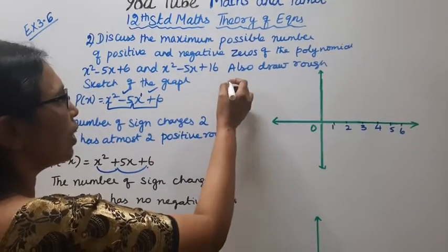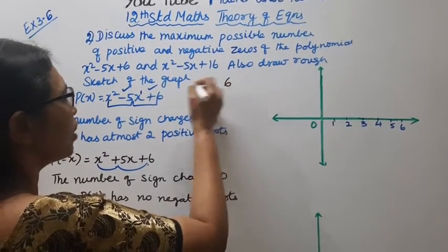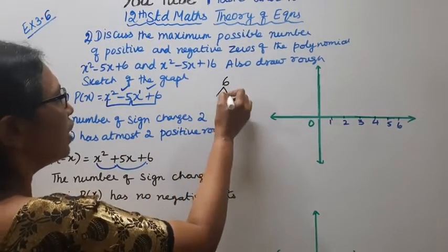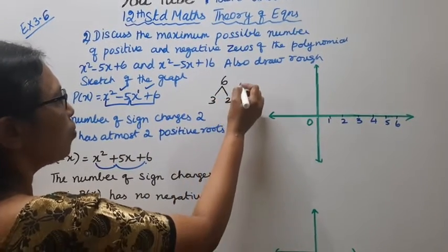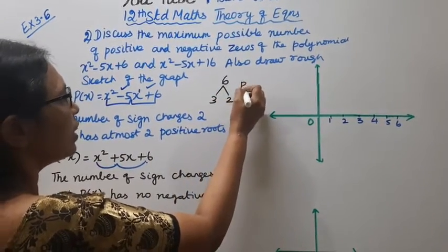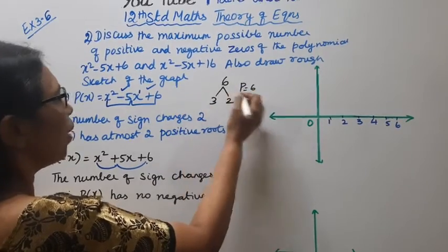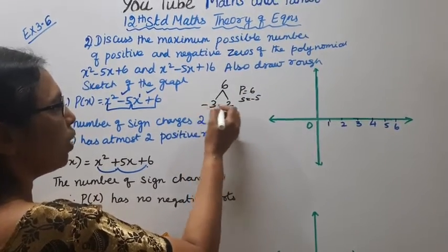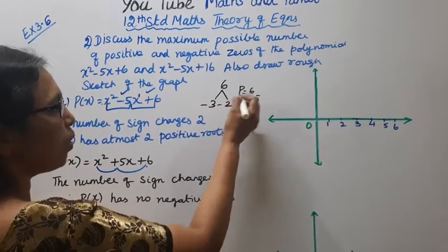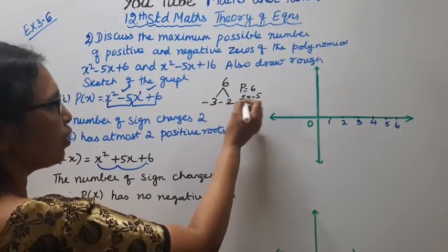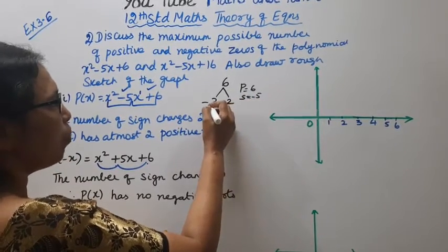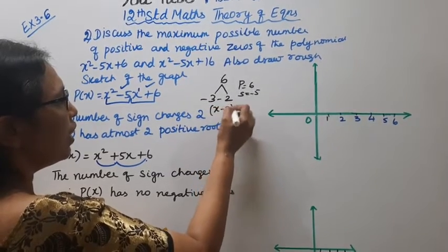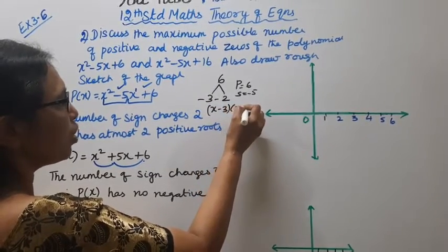Now we factorize x² - 5x + 6. We need two numbers with product 6 and sum -5: those are -3 and -2, since (-3) × (-2) = 6 and (-3) + (-2) = -5. So x² - 5x + 6 = (x - 3)(x - 2).